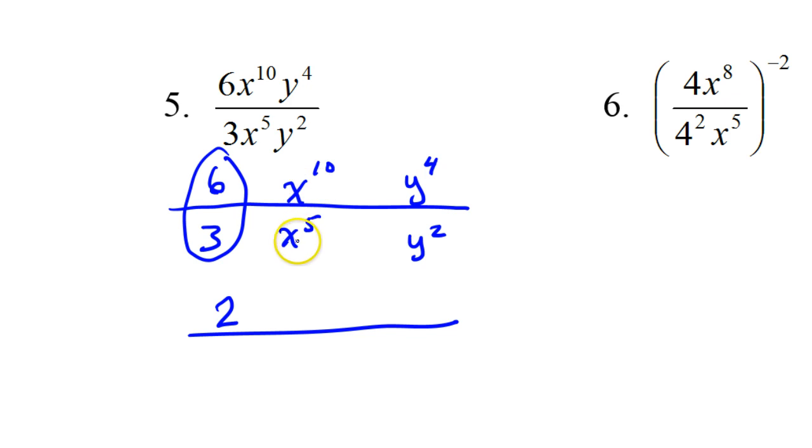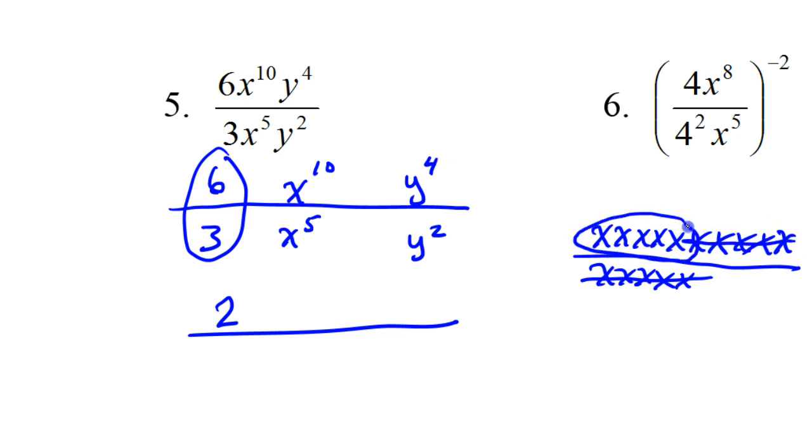Now, x to the tenth power over x to the fifth power. Remember, x to the tenth power is like 10 x's over 5 x's. So the 5 x's in the bottom are going to cancel out 5 x's in the top. That's going to leave 5 x's in the top. So that's why I'm going to have x to the fifth power in the top. And sure, you can look at it as 10 minus 5. But if you think of it as canceling, it'll help you be clear where the leftover x's will be, in this case, in the top.